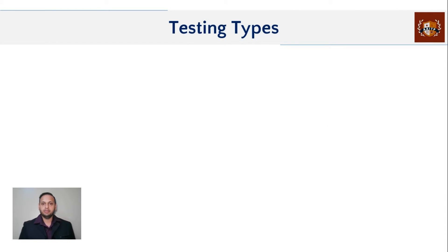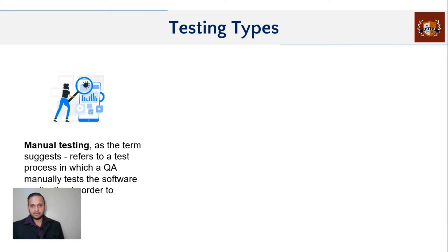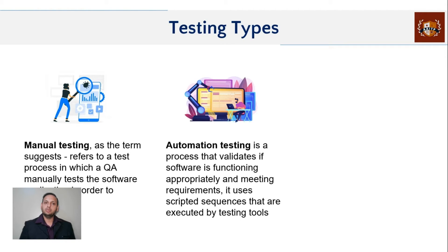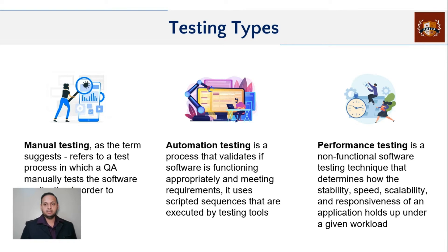Even before we talk about whether performance testing can be done manually or not, let's start from the beginning and try to understand what testing is all about. There are plenty of testing types but broadly they are classified into three. First is manual testing — as the name suggests, you are testing the application manually, logging in and ensuring each functionality is working fine. The advancement of that is automation testing, where you use automated scripts with tools like Selenium to validate functionality much more efficiently.